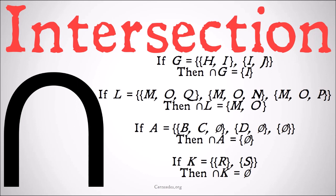Let's look at some examples. If G is equal to the class of the class {H, I} and the class {I, J}, then the intersection of G is just the class of I, because I is the only member that's in both {H, I} and {I, J}. If L is equal to the class of the class {M, O, Q}, the class {M, O, N}, and the class {M, O, P}, then the intersection of L is equal to the class {M, O}, because M and O are the only elements shared by all three members of L. Q, N, and P are not shared by all three members, so they aren't members of the intersection of L.